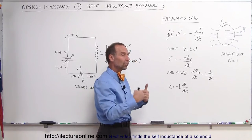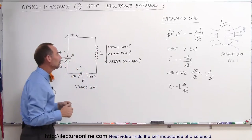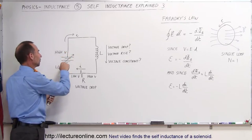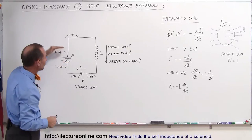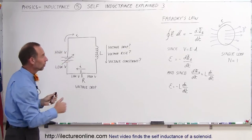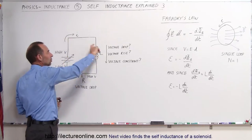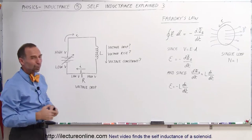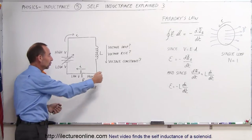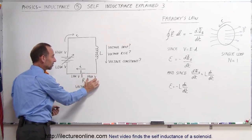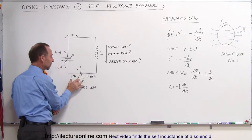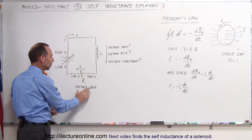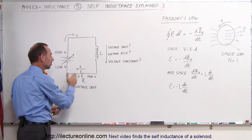So: current increases, EMF is negative; current decreases, EMF is positive. Now let's look at this circuit and try to make sense of this. Let's say we have a variable power source — a variable battery — that we can increase or decrease. When we increase it, we increase the current; when we decrease it, we decrease the current. The current is traveling in this direction, and it has to go across an inductor and through a resistor. With the resistor, regardless of whether the current is increasing or decreasing, if the current is going from right to left, then on the right side we'll have a higher potential and on the left side a lower potential. When we travel across the resistor in the direction of the current, there will be a voltage drop.